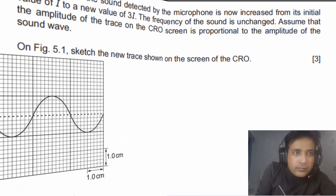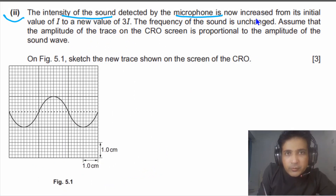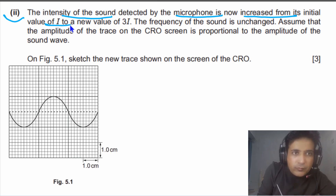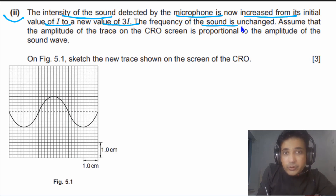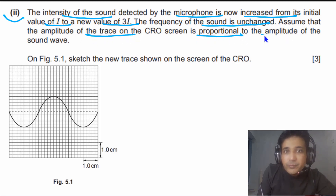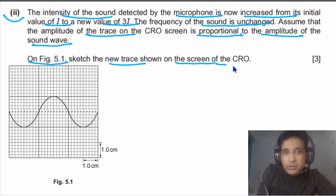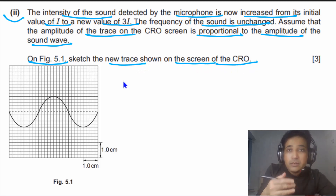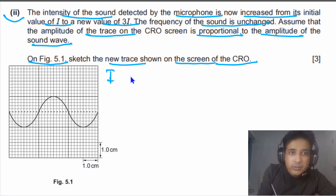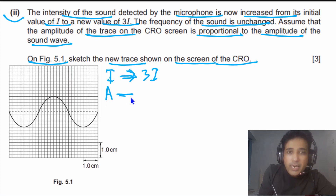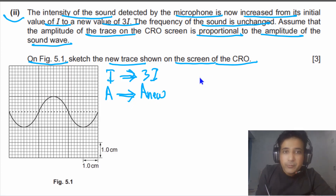For the second part, it is given that the intensity of the sound detected by the microphone is now increased from its initial value of i to a new value of 3i, and the frequency of the sound is unchanged. Assuming the amplitude of the trace on the CRO screen is proportional to the amplitude of the sound, we need to sketch a new trace on figure 5.1. In this case, intensity has been increased from i to 3i.